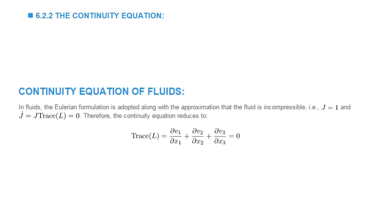If we substitute J-dot equals zero and J equals one for an isochoric motion such as incompressible fluids, we retrieve the famous incompressible fluid continuity equation, which states that trace L equals zero. Trace L is the trace of the velocity gradient: partial v1 by partial x1, partial v2 by partial x2, and partial v3 by partial x3.